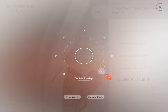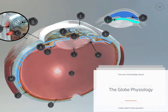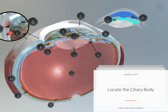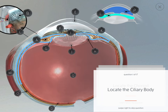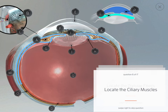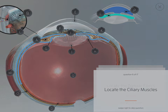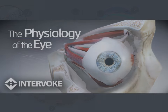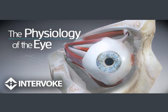Schlem's Canal is the channel located in the eye. Test your knowledge about the globe physiology: locate the ciliary body, locate the choroid, locate the lens, locate the pupil, locate the iris, locate the ciliary muscles, and locate the zonular fibers.